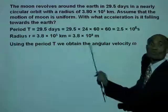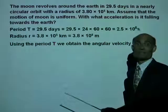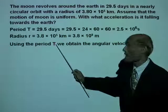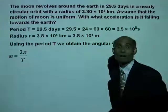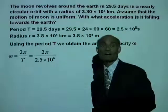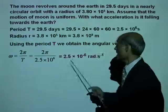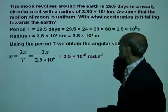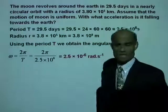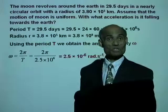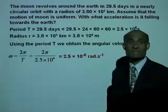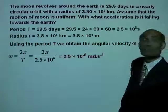How do we obtain the angular velocity omega if we know the period? The angle described during one revolution is 2 pi, so omega equals 2 pi divided by the period. That will be 2 pi divided by 2.5 times 10 to the 6th seconds, and that is 2.5 times 10 to the negative 6th radian per second.